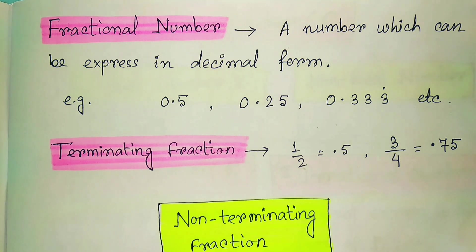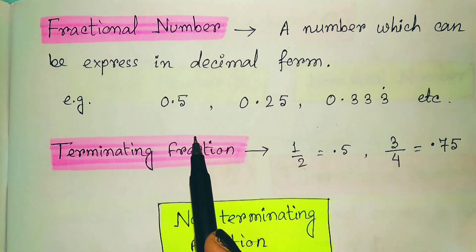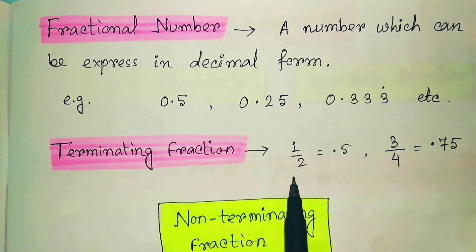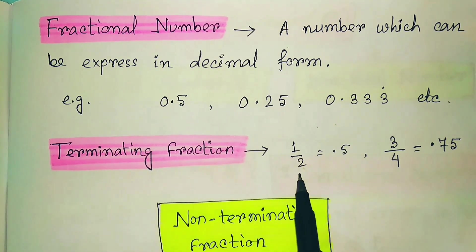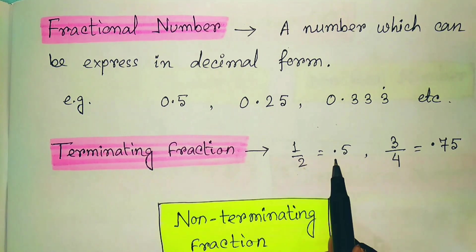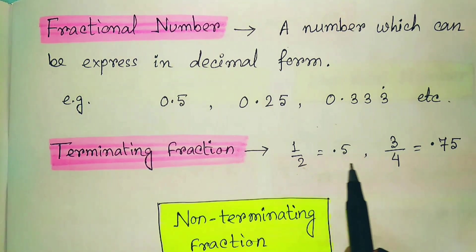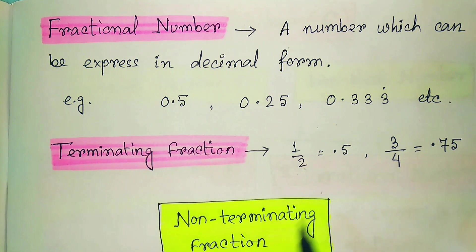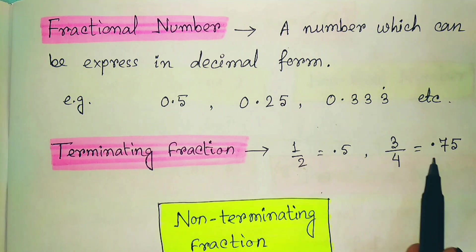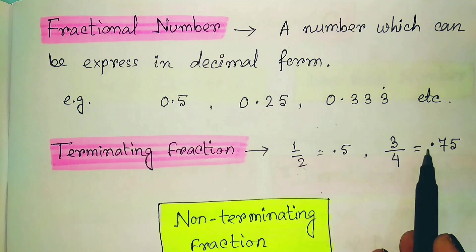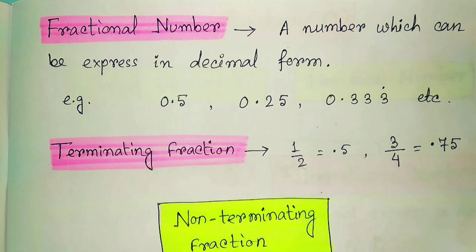Terminating fractions are those where the decimal has an end. For example, 1/2 = 0.5 — after 0.5 there is nothing, so it is a terminating fraction. Similarly, 3/4 = 0.75, which is also a terminating fraction, because the digits after the decimal are finite and defined.